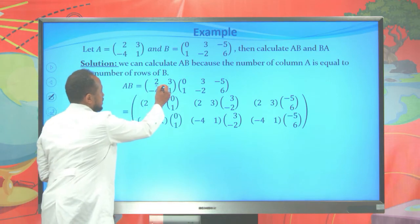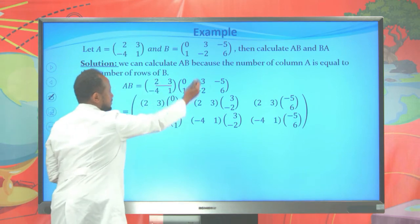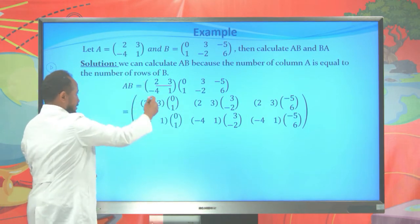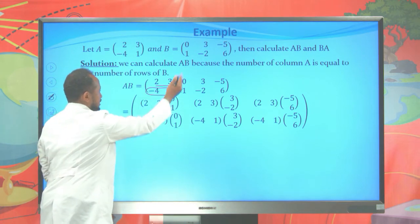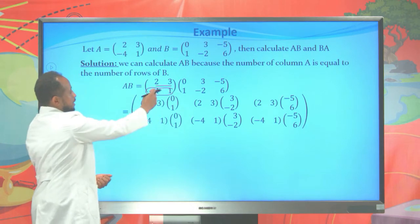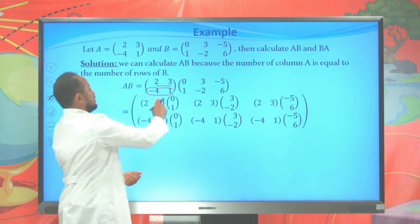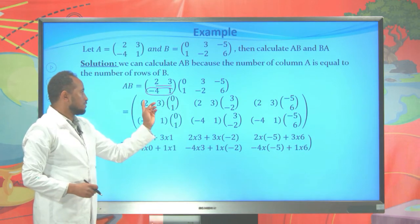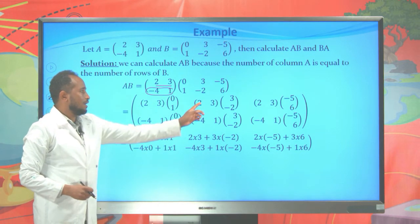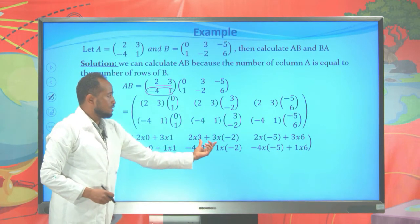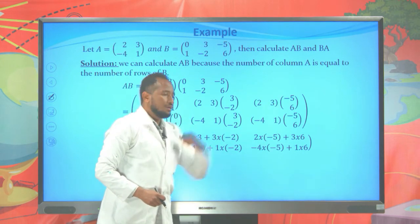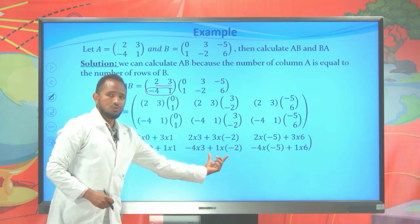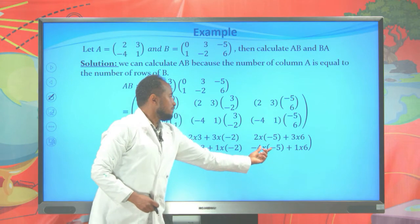The product A times B is done row by column. Row [2, 3] multiplies column [0, 1]: that gives 2×0 + 3×1. Row [2, 3] multiplies column [3, -2]: gives 2×3 + 3×(-2). Row [2, 3] multiplies column [-5, 6]: gives 2×(-5) + 3×6. For the second row, [-4, 1] multiplies [0, 1]: gives -4×0 + 1×1. Then [-4, 1] multiplies [3, -2]: gives -4×3 + 1×(-2). And [-4, 1] multiplies [-5, 6]: gives -4×(-5) + 1×6.